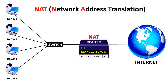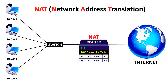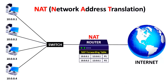Let's take another example so that it will be easy to understand. When PC2, assigned with the private IP address 10.0.0.2, wants to access the internet, it will first send the request to the router. The router converts this private IP address into public, adds a unique port number to it, and saves this information to its NAT forwarding table. After that, it forwards the request to the internet. When the router receives the reply from the internet, it checks its NAT forwarding table, converts the public IP address into private, and sends the packet to the requested PC.